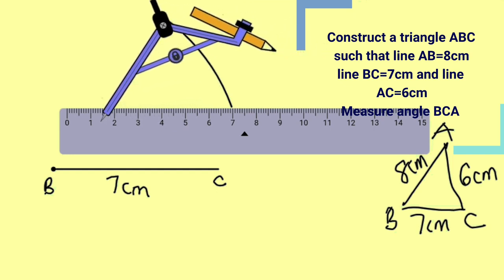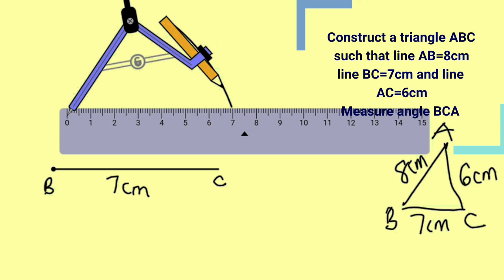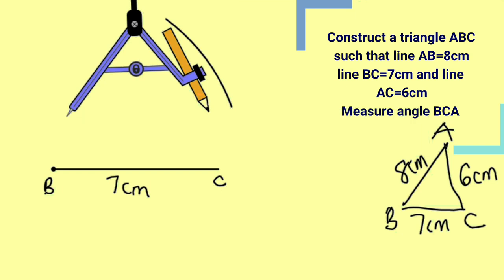From the origin, 0, let us measure 6cm. This is 6cm, now place the pointer at point C and construct an arc to cut the previous arc.